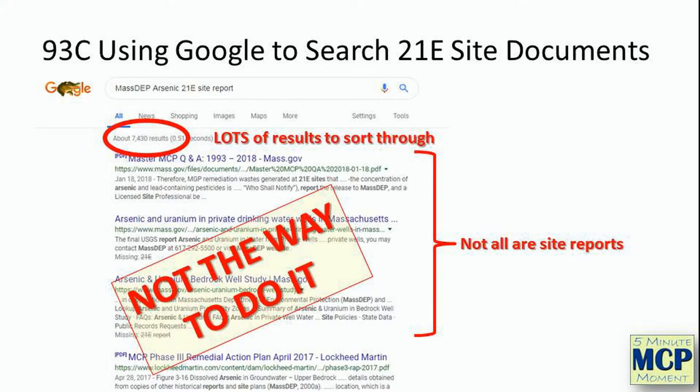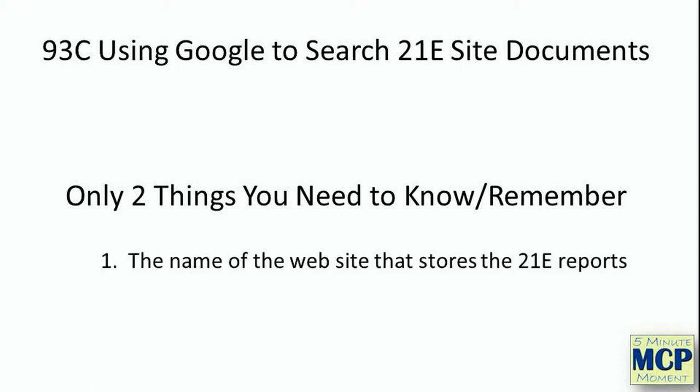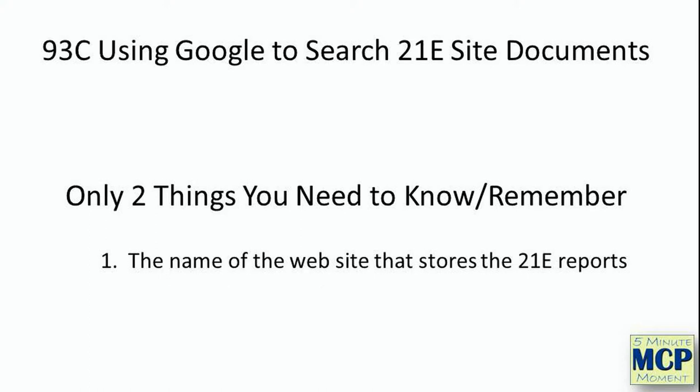There must be a better way, and in fact there is. There are only two things you need to know about it. First, you have to tell Google where to do your search — you need to know the name of the server that stores the 21e reports you want to search through. And then you need to tell Google what to search for, being very specific to narrow it down and avoid receiving thousands of results.